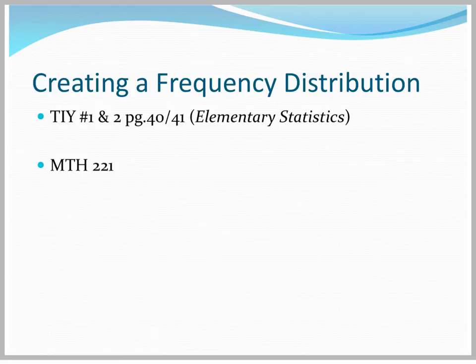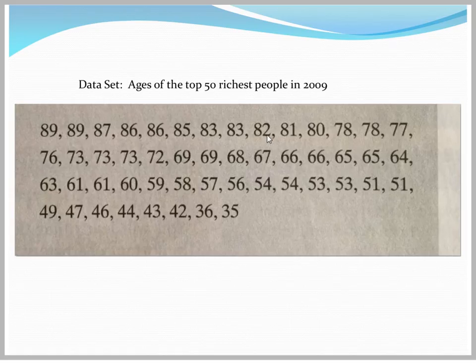In this guide, I'll walk you through the steps for creating a frequency distribution. For an example, we'll use the data in the Try It Yourself on pages 40 and 41 of the elementary statistics text used for Math 221. If you take a look at this data set, you'll see that we're looking at the ages of the top 50 richest people recorded in the year 2009. Those ages range from age 35 to 89.